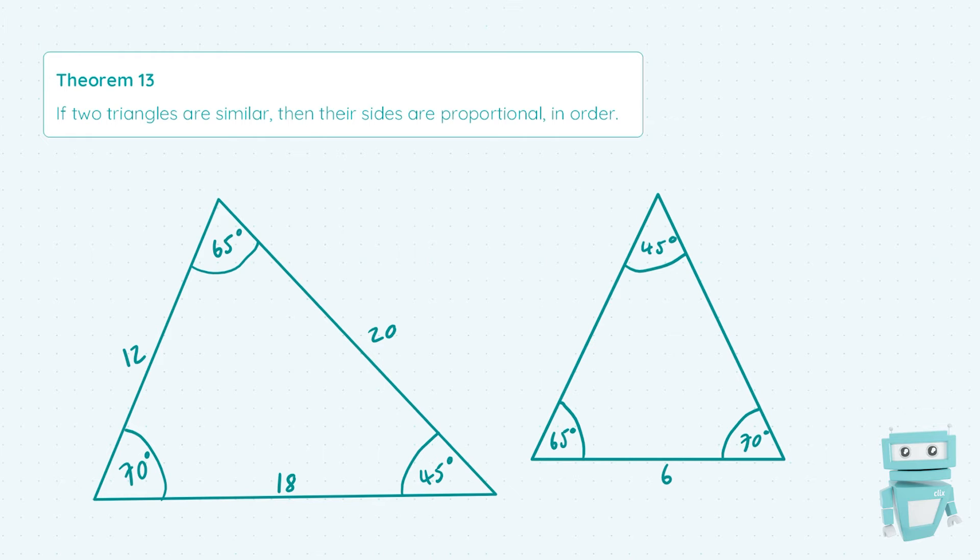But that makes no difference to what this theorem means, which is to do with the sides. So essentially when we have two similar triangles, let's say we take the length of one side and increase it, the other side lengths in the other similar triangle will increase or decrease proportionally to how we change the first side to compare it to the second triangle.